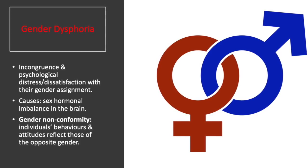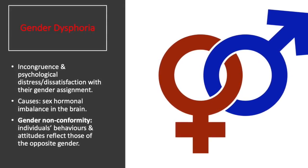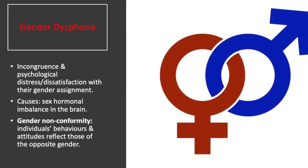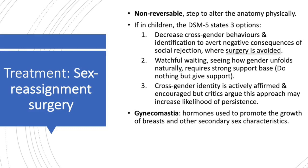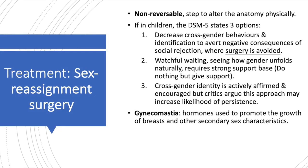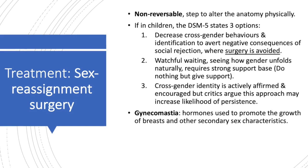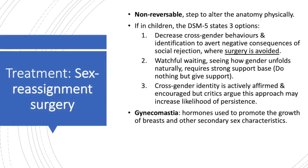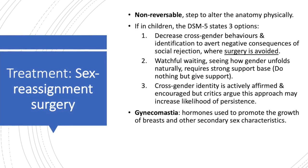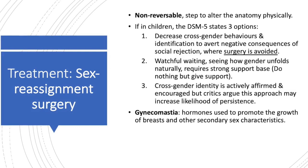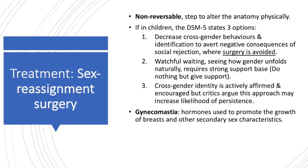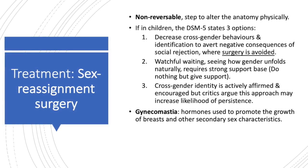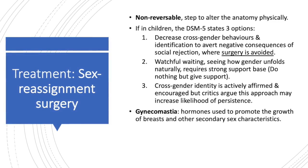Gender non-conformity is when individuals' behaviors and attitudes reflect those of the opposite gender, though not much is known about whether this is related to dysphoria. Treatment of gender dysphoria includes sex reassignment surgery, a non-reversible procedure requiring multiple surgical steps and the addition of hormones. In children, the DSM-5 states there are three options: the first is to decrease cross-gender behaviors and identification to avert negative consequences of social rejection, thereby avoiding surgery.